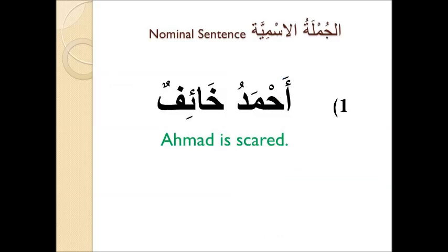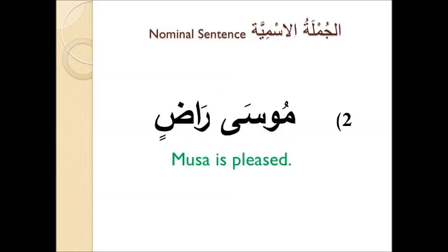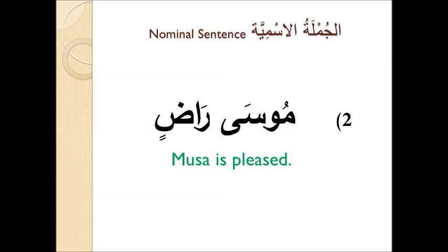Example one: Ahmadu kha'if — Ahmad is scared. Example two: Musa radin — Musa is pleased. Three: salihun jau'an — Salih is hungry. Don't forget to add the helping or auxiliary verb when translating into English.